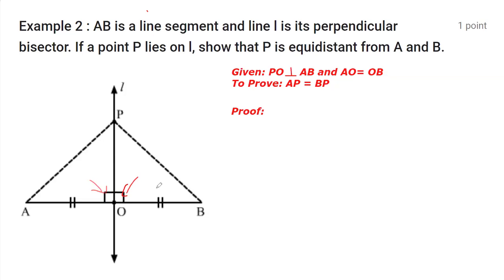So this is what's given. What we have to prove is that point P is equidistant from A and B. That means we have to prove AP equals BP. This is what we have to prove in the proof part.